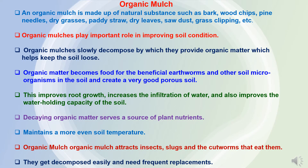Here we will go through details about organic mulching. Organic mulching consists of natural substances like bark, wood chips, pine needles, dry grasses, sugarcane trash, dry leaves, shredded leaves, sawdust, and grass clippings. Organic mulching plays an important role in improving soil conditions because they are slowly decomposed, by which they add organic matter to the soil, which helps to keep the soil loose. Organic matter becomes a source for beneficial earthworms and other soil microorganisms, creating good porosity in the soil which is beneficial for crop growth and root growth.